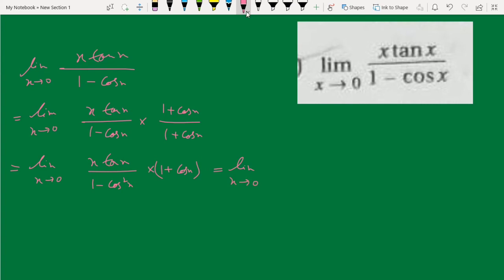1 minus cos square x equals sin square x. Using a plus b, a minus b equals a square minus b square. So 1 minus cos square x equals sin square x, which gives us tan x over sin square x times 1 plus cos x.